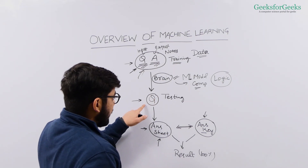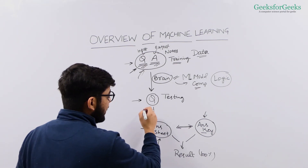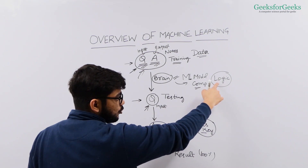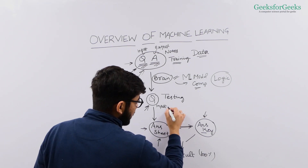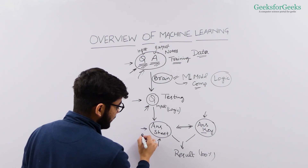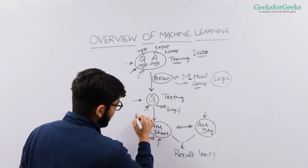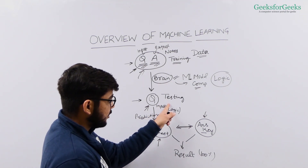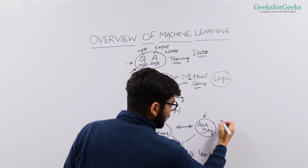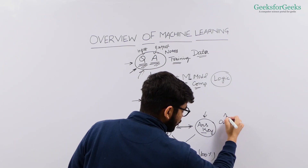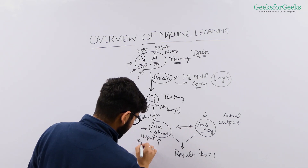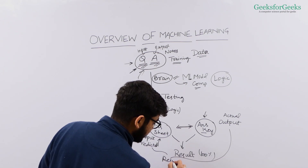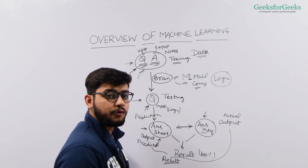Now using this logic, while testing our model, we again give some inputs. Using this logic, it will predict some output — this is the prediction part. You are taking the exam of your machine learning model, and it's predicting that this input should have this output. Now you have the actual output with you, and using the actual output and the predicted output, you compare both and come up with the result. This will be the performance of your machine learning model.